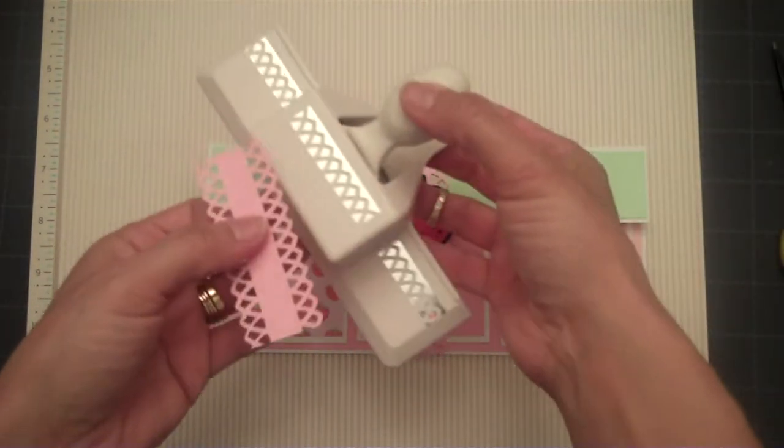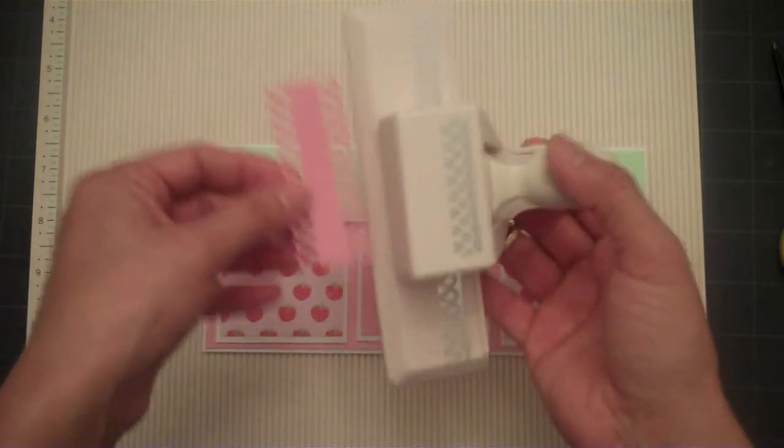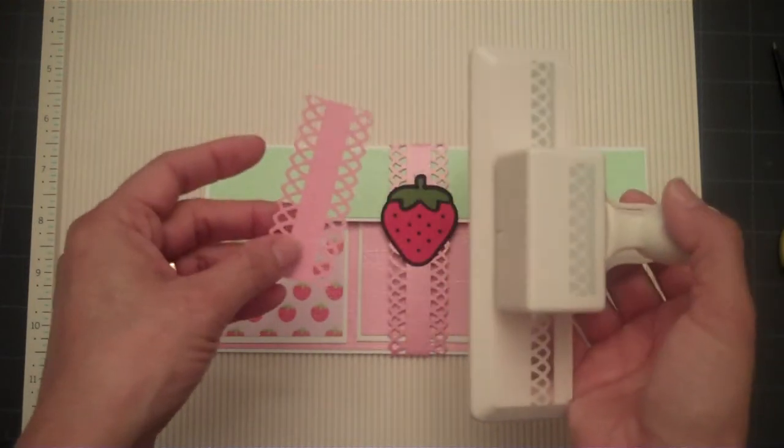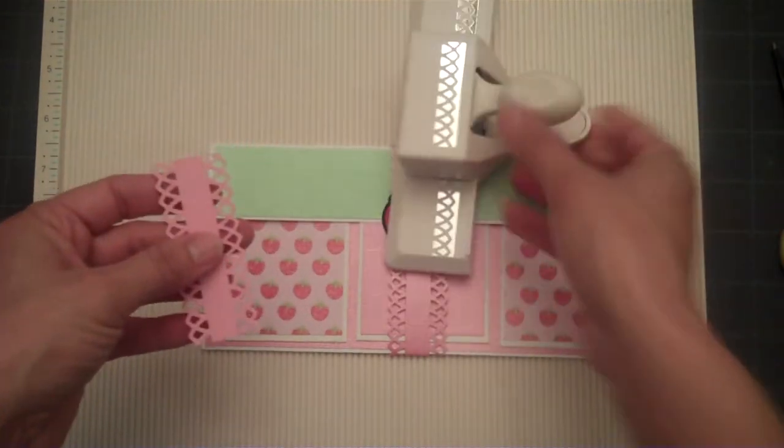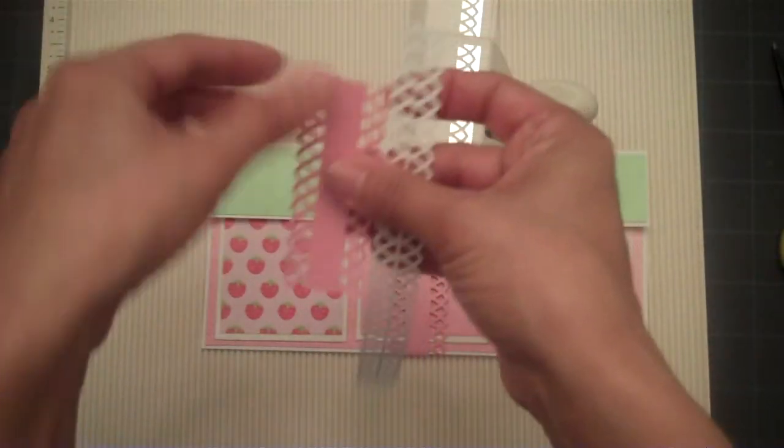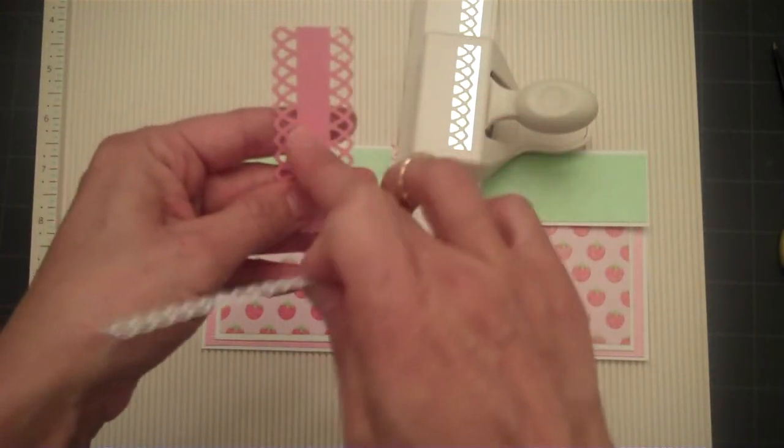I used this Martha Stewart punch. And I punched one side. And then I cut my paper and then flipped it and did the other side. It all depends on how far you want your center strip. How wide you want your center strip.